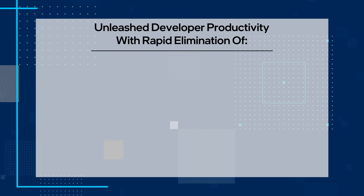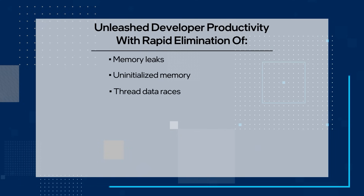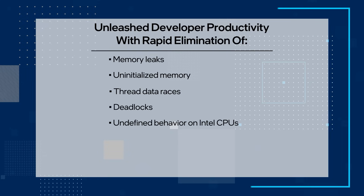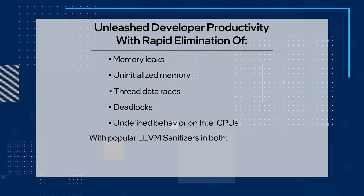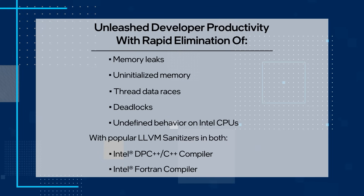Our final highlights showcase unleashed developer productivity with rapid elimination of memory leaks, uninitialized memory, thread data races, deadlocks, and undefined behavior on Intel CPUs with popular LLVM sanitizers in both Intel DPC++ C++ compiler and the Intel Fortran compiler. You'll get faster access to AI frameworks, tools, and libraries, as well as easier evaluation of advanced preview features.